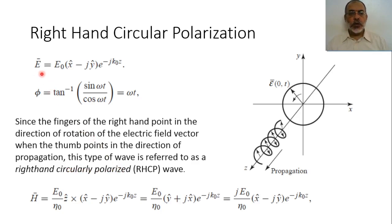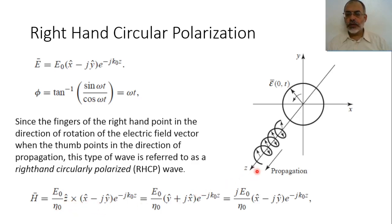This is the electric field of the right-hand circular polarization. To obtain the corresponding magnetic field, H equals (1/η) multiplied by ẑ cross E. The electric field is E0 multiplied by (x̂ − jŷ) multiplied by e to the power minus jk₀z. Applying the cross product: ẑ × x̂ = ŷ and ẑ × ŷ = −x̂. So the magnetic field is (E0/η0) multiplied by (ŷ + jx̂) multiplied by e to the power minus jk₀z.